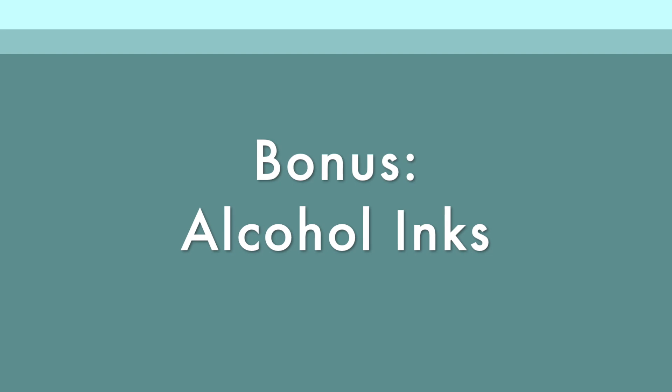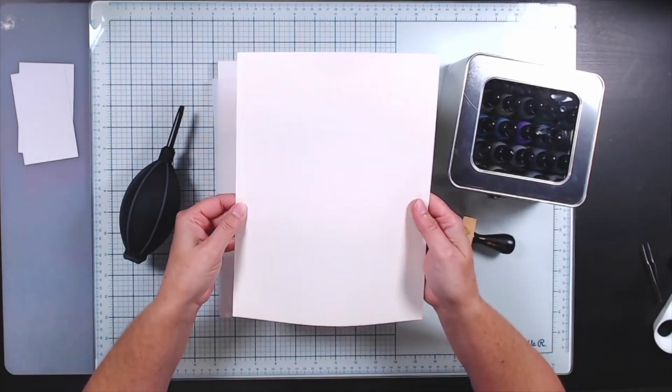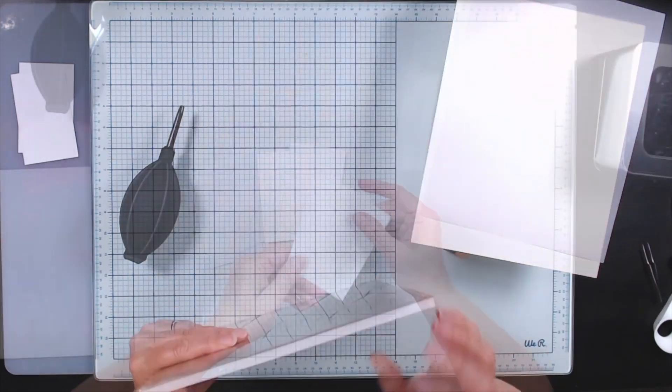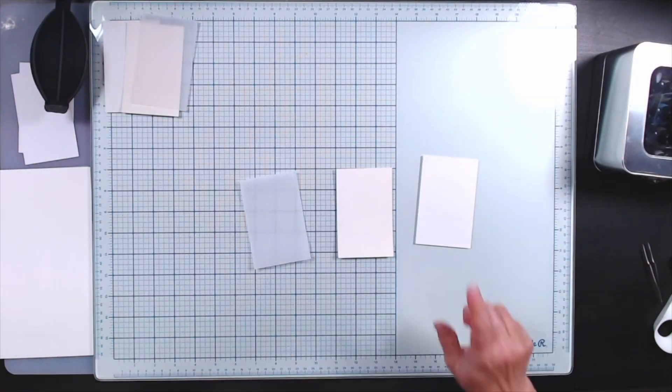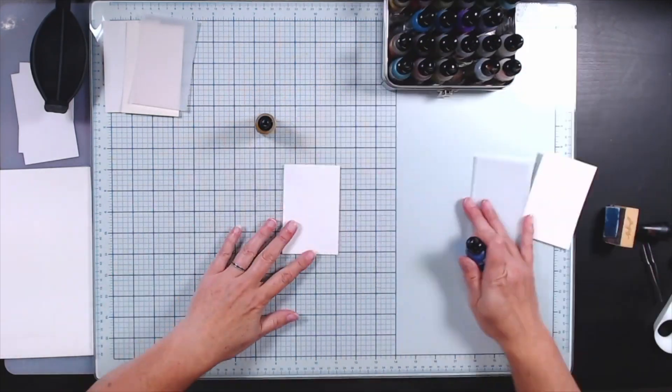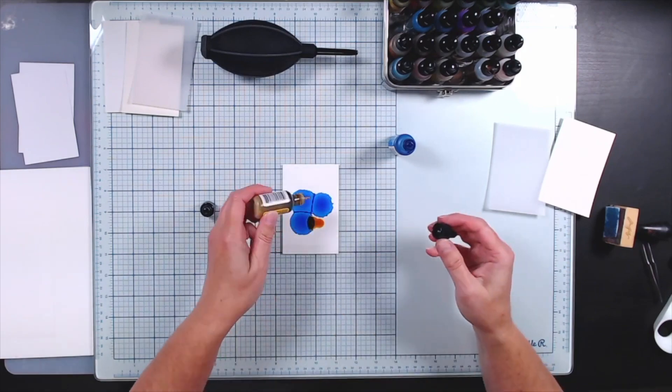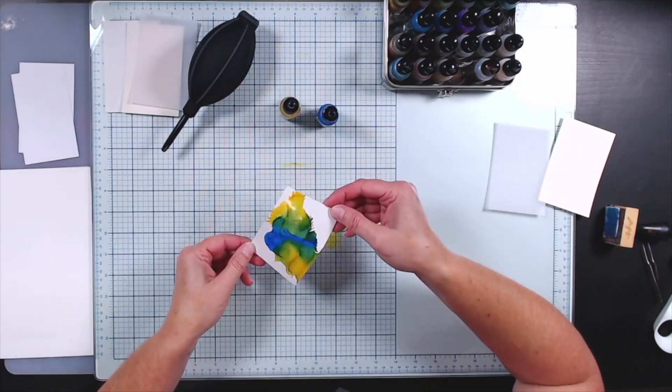So that's the main techniques. I do have one bonus technique for you, which is using alcohol ink. And I call this a bonus because it's more of a mixed media technique rather than an image technique. So I'm going to play with these alcohol inks. I just learned this technique a couple of months ago, so I'm new to this and you'll see me playing and experimenting.